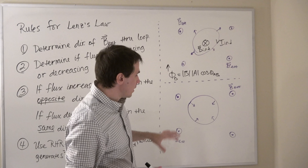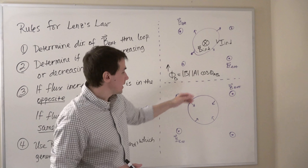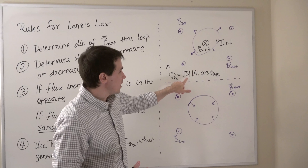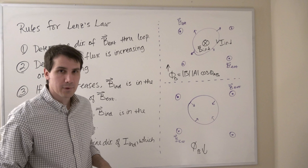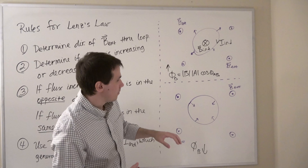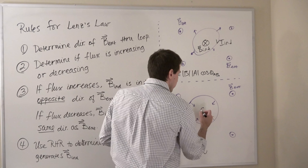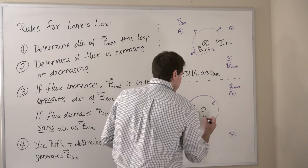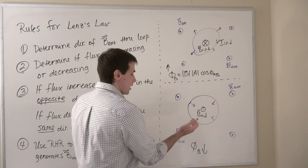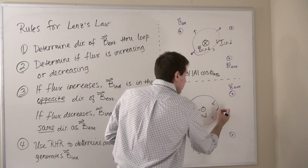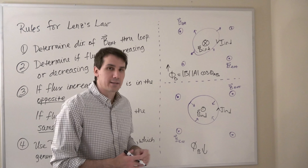For the contracting loop case, the magnetic field is constant but the area is decreasing, which means the flux is decreasing. When the flux is decreasing, the induced magnetic field points in the same direction as the external magnetic field — so induced B points out of the board. Finally, using the right-hand rule, the induced current must point in the counterclockwise direction in order to create an induced magnetic field out of the board.